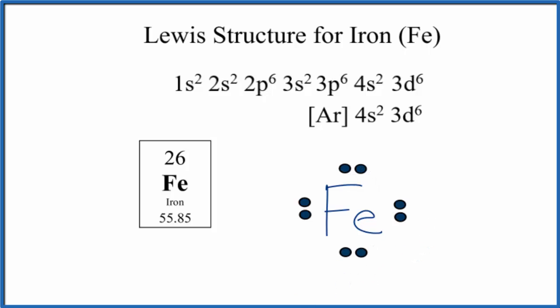So if you're asked to draw the Lewis structure for iron, this is a pretty good way to do it. You can defend your answer saying that the valence electrons that we put around the iron, they're outside the noble gas core.